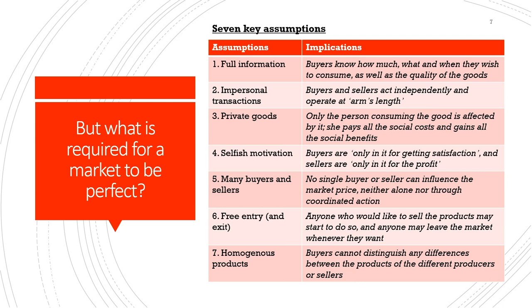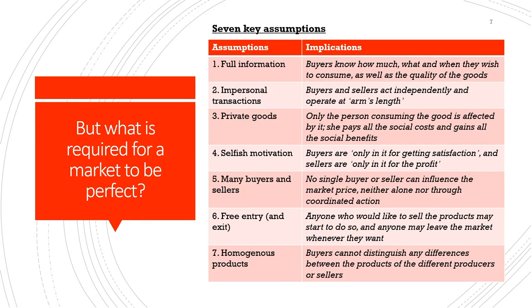The second assumption in a perfectly competitive market is impersonal transactions — buyers and sellers have absolutely no connection with or influence over each other. Buyers and sellers are acting independently and very rationally. Sellers cannot influence buyers in any non-price manner, and there is no way sellers can take advantage of consumers by providing selective information. Both buyers and sellers are acting on their own self-interest: consumers seek the right commodity at the right price, and producers seek the right price for their goods.